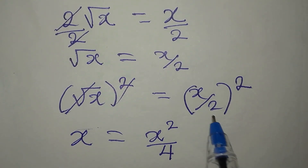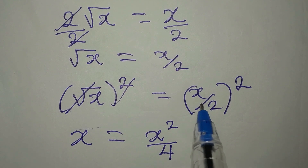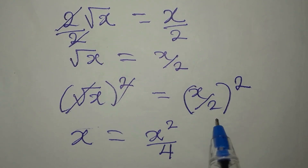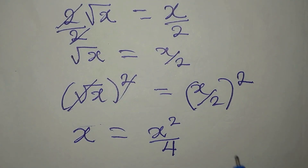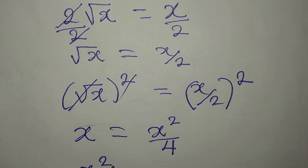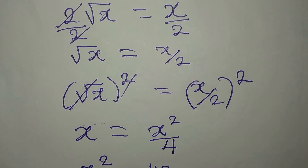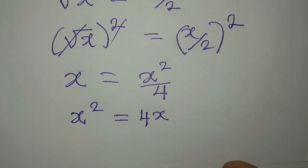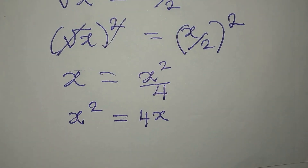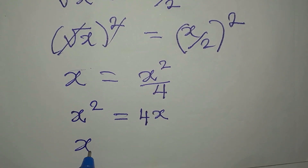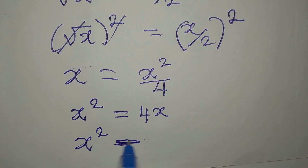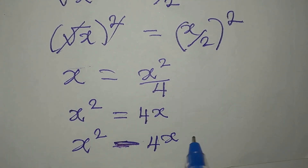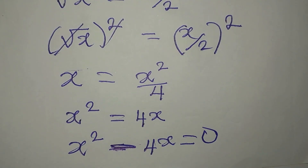Do not forget it is both the denominator and the numerator that have the power here. Now cross multiply so that x squared will be equal to 4x. This is now quadratic. Bring this to the left so that x squared minus 4x equals 0.